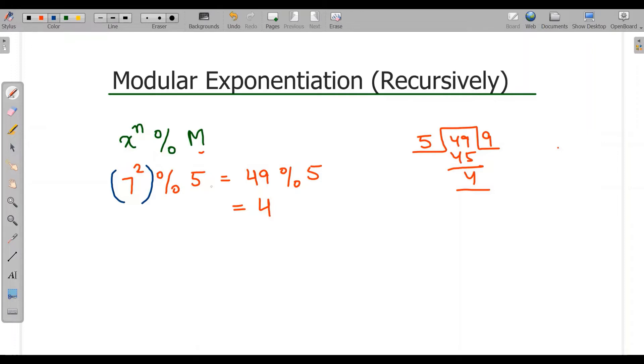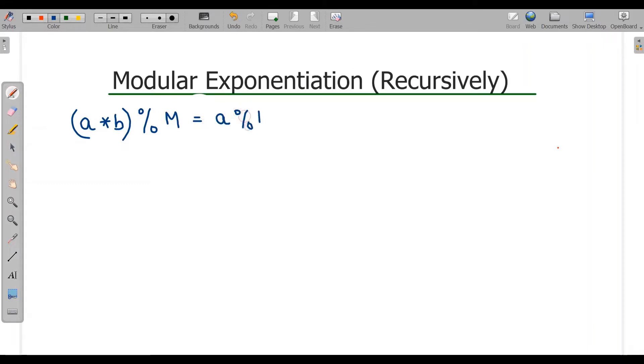Fortunately we have laws of associativity, commutativity and distributivity. So we will use them to solve this problem. For example, if we have a into b modulus M, this we can solve through a modulus M.